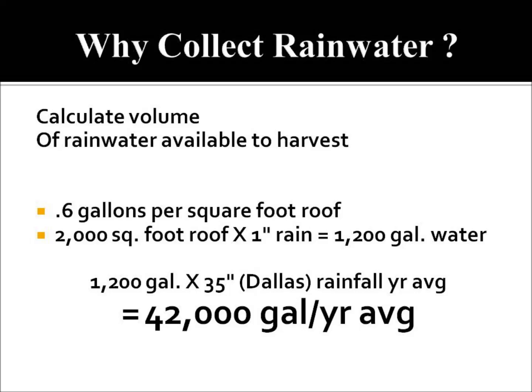So why would we consider collecting rainwater? First of all, rainwater is a high quality source of irrigation water. If we take the scenario of calculating how much water we could capture off a 2,000 square foot roof line with one inch of rainfall, we would capture 1,200 gallons. Considering that average rainfall for Dallas is 35 inches, we can potentially capture 42,000 gallons of water per year on average. So it's worth considering rainwater harvesting as a source for irrigation.